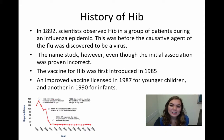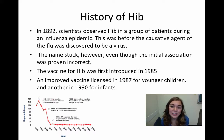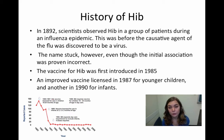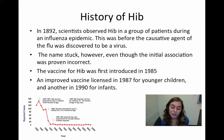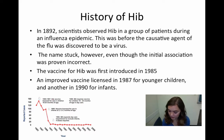Hib has kind of a unique history. Despite its name, it has nothing to do with influenza. In 1892, scientists first observed Hib in a group of individuals during an influenza epidemic, and this was before the causative agent of the flu was determined to be a virus. So they named it Haemophilus influenzae. Even after the causative agent of the flu was determined to be a virus, Hib kept its name — confusingly enough — because it was so commonly known as bacterial influenza.